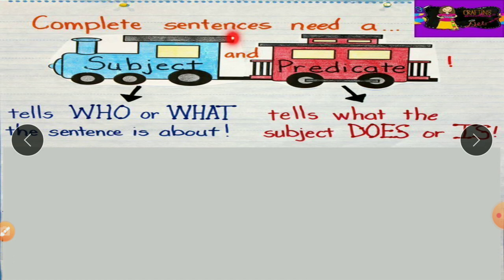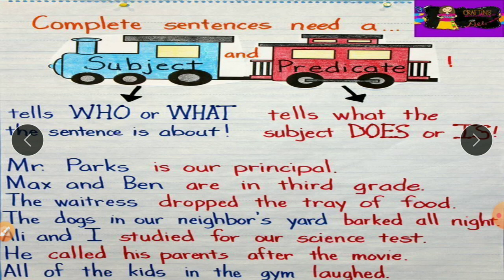A complete sentence needs a subject and a predicate. A sentence will always have both. What is a subject? It tells who or what the sentence is about — simply, whom we are talking about. What is a predicate? It tells what the subject does or is — simply, it tells about the subject. Let's see some examples.